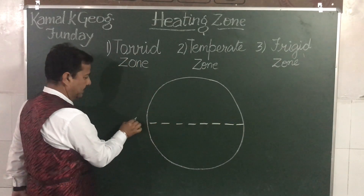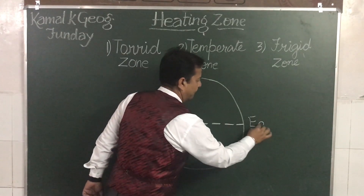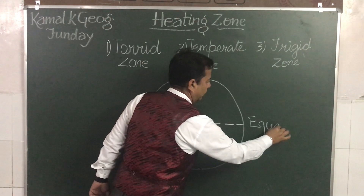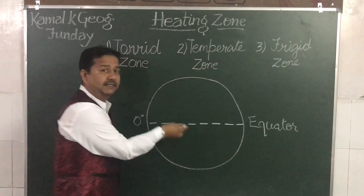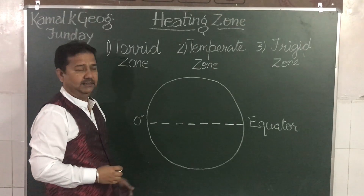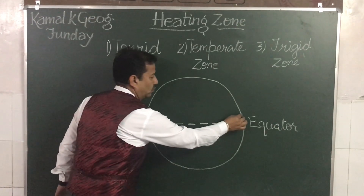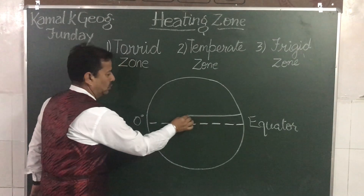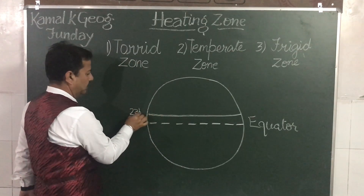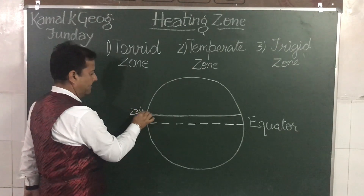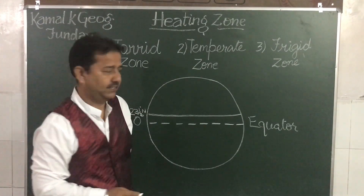This is your zero degree equator. In the northern hemisphere, there is another latitude called 23 and a half degrees north, also known as the Tropic of Cancer.